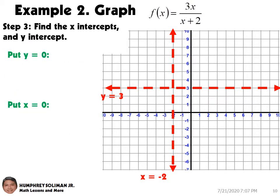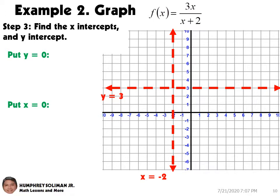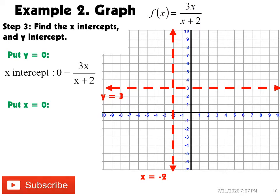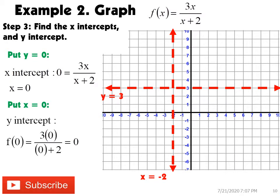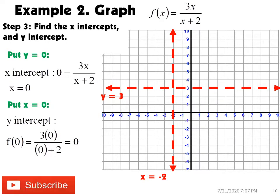For step number 3, we need to find the x and y intercept. We will substitute y equals 0 to get the x-intercept. This gives us x equals 0. To solve for the y-intercept, we substitute x equals 0 into our function. This gives us y equals 0. Since our x-intercept is 0 and y-intercept is 0, we have a point at the origin, (0, 0).